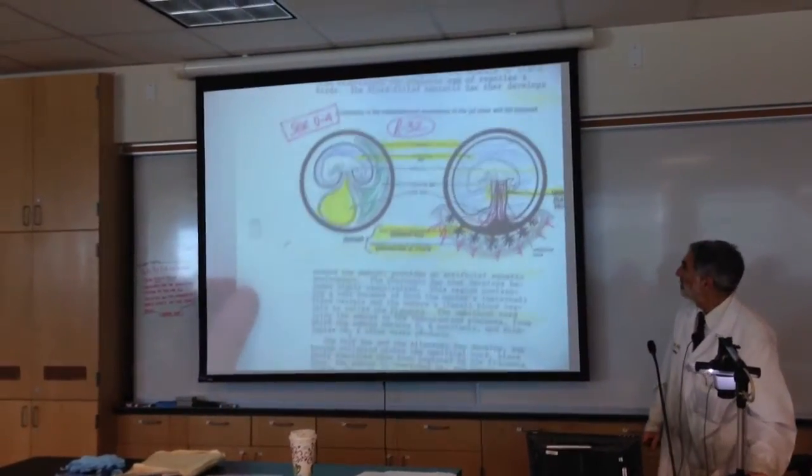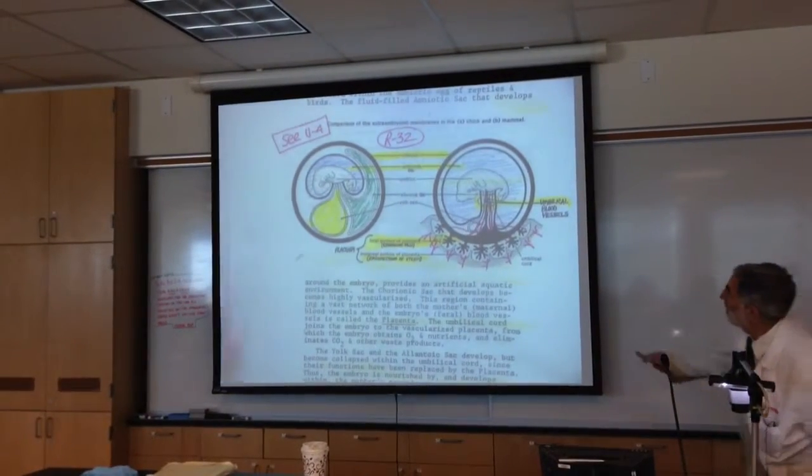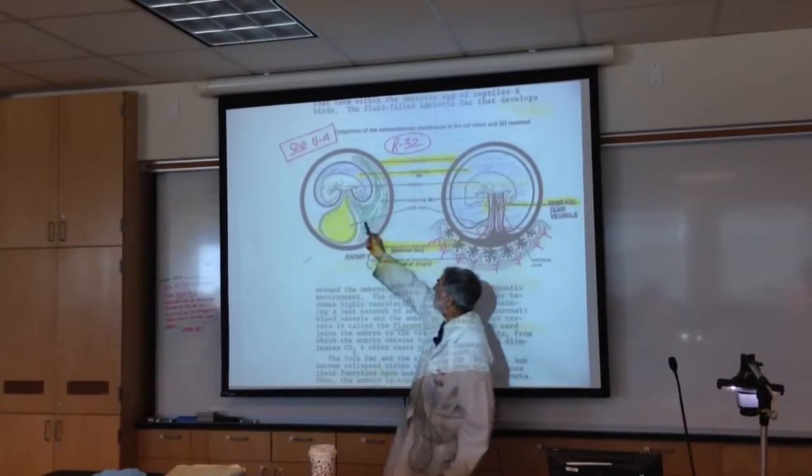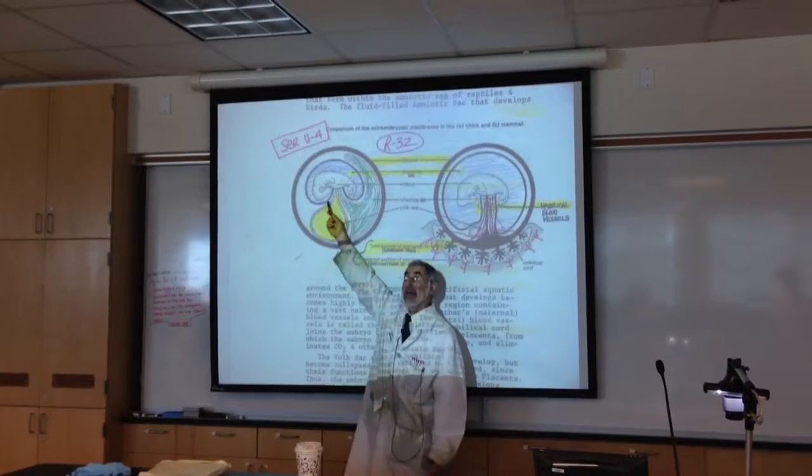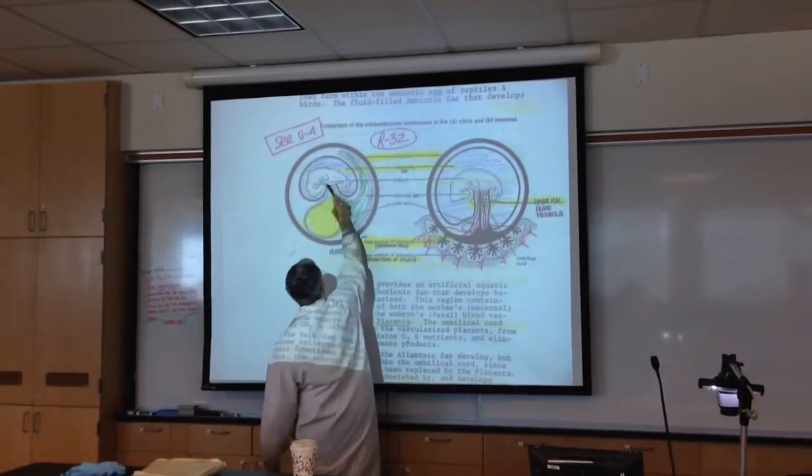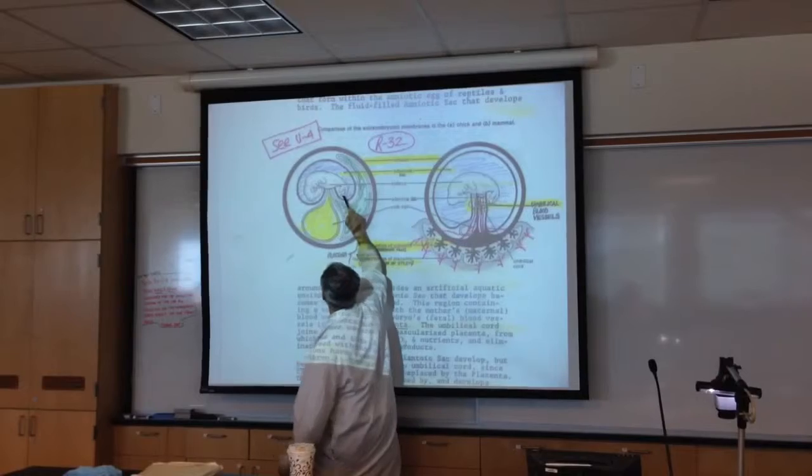And on R32, so here, again, on your left is the little Amnionicae, right, with the reptile or the chick, surrounded by the Amniotic sac,